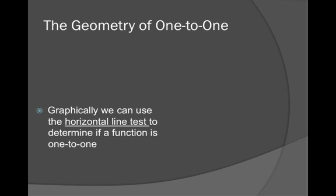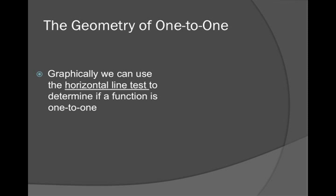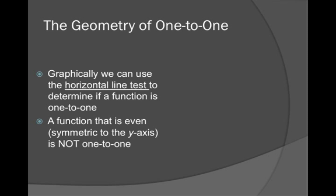The geometry of 1 to 1. Graphically, we can now use the horizontal line test to determine if a function is 1 to 1. Remember, when we were testing for functions, we had the vertical line test. Now for 1 to 1, we have the horizontal line test.